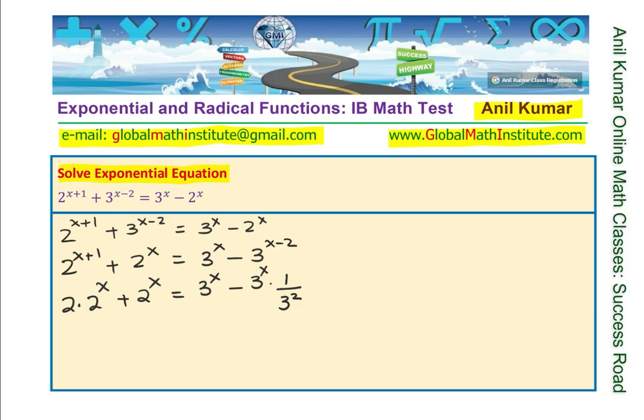So on the left side, we get 2 plus 1, which is 3 times 2^x. And on the right hand side, we can take 9 as the common denominator and here we get 9 times 3^x minus 3^x. So that becomes 8 times 3^x over 9.